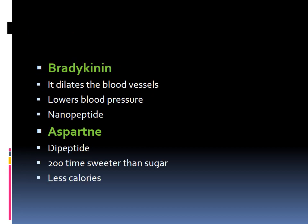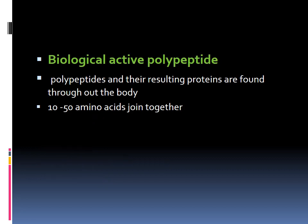The next is bradykinin, which dilates blood vessels present in arteries and helps the arteries bear high blood pressure. When blood is released from the aorta with high pressure, bradykinin enables the blood vessel to dilate and sustain that pressure. The next is aspartate, which provides calories to the body.